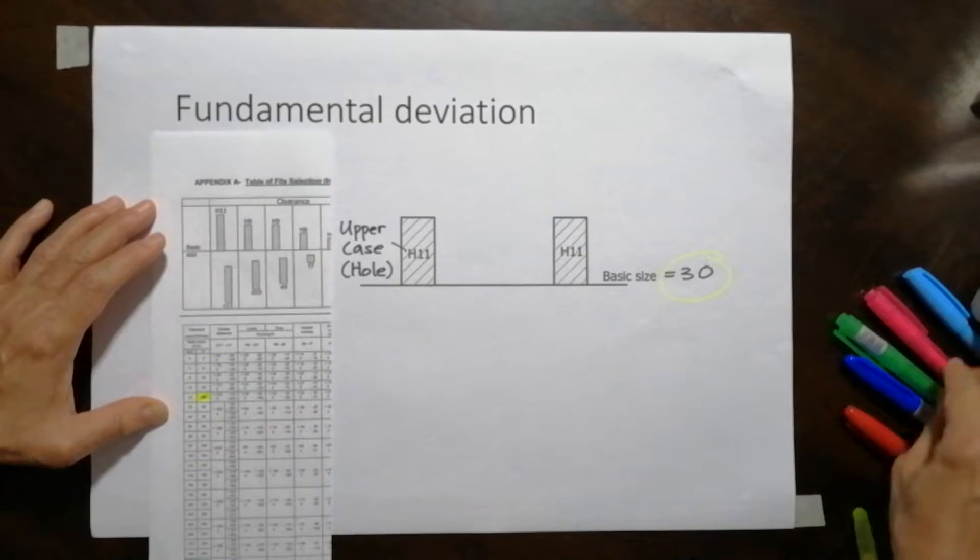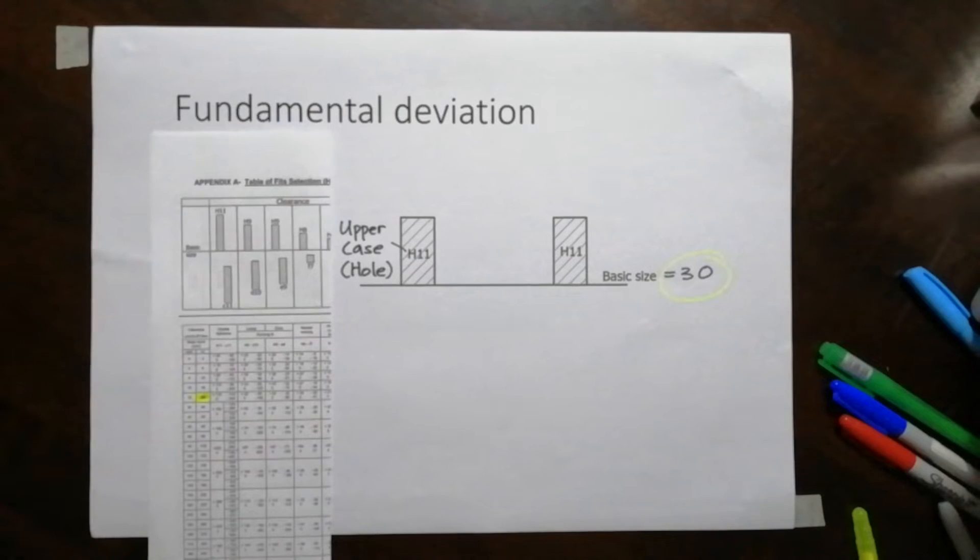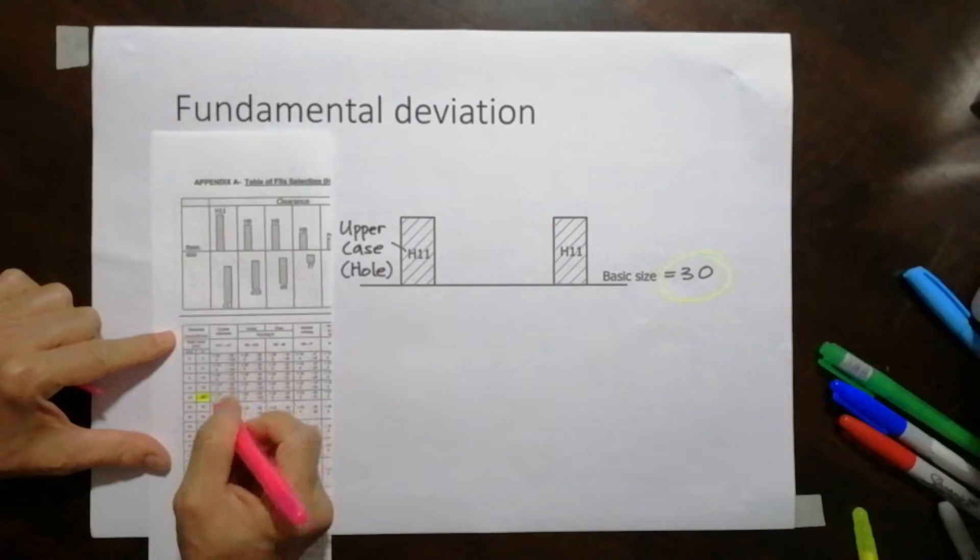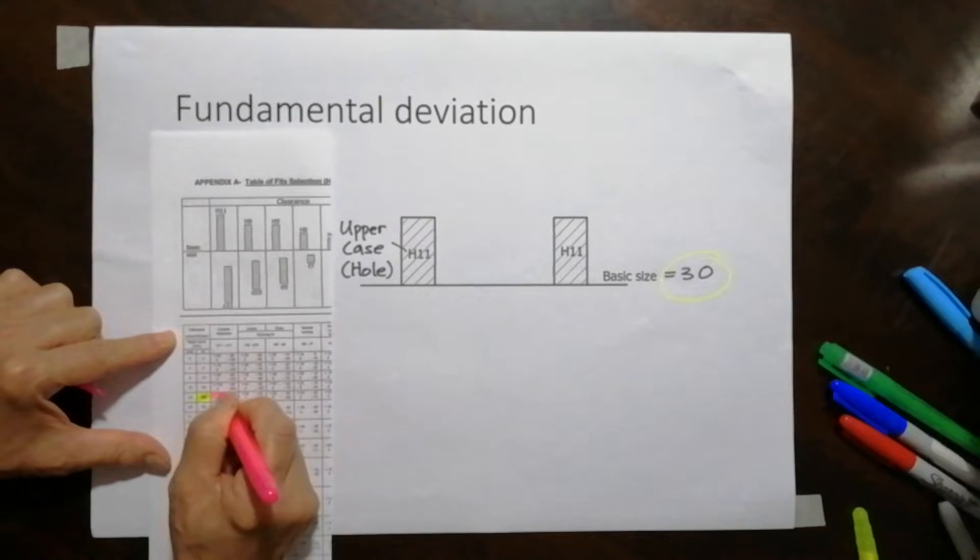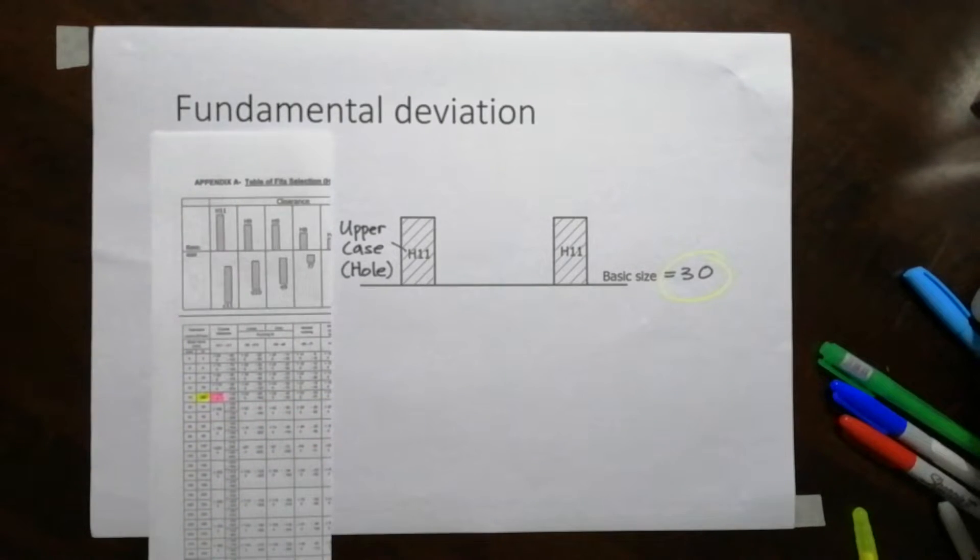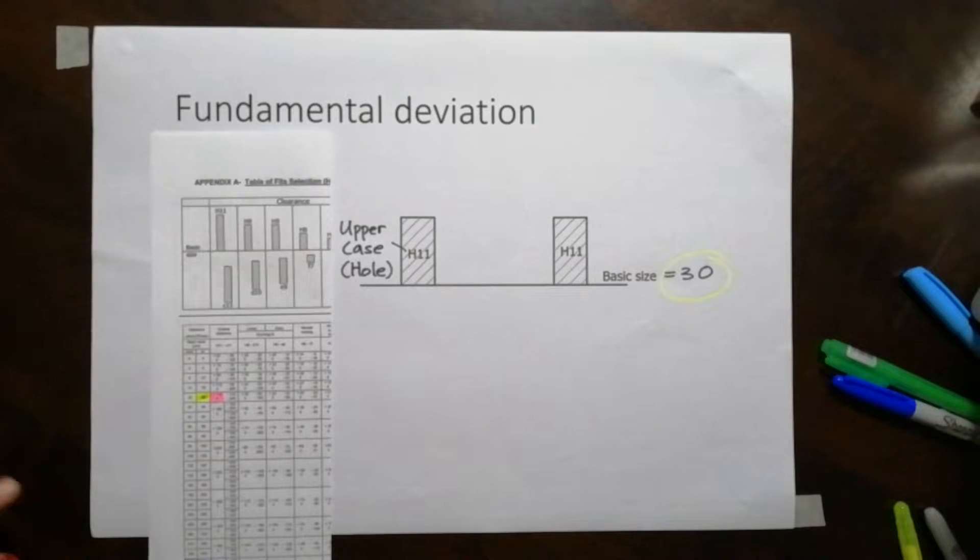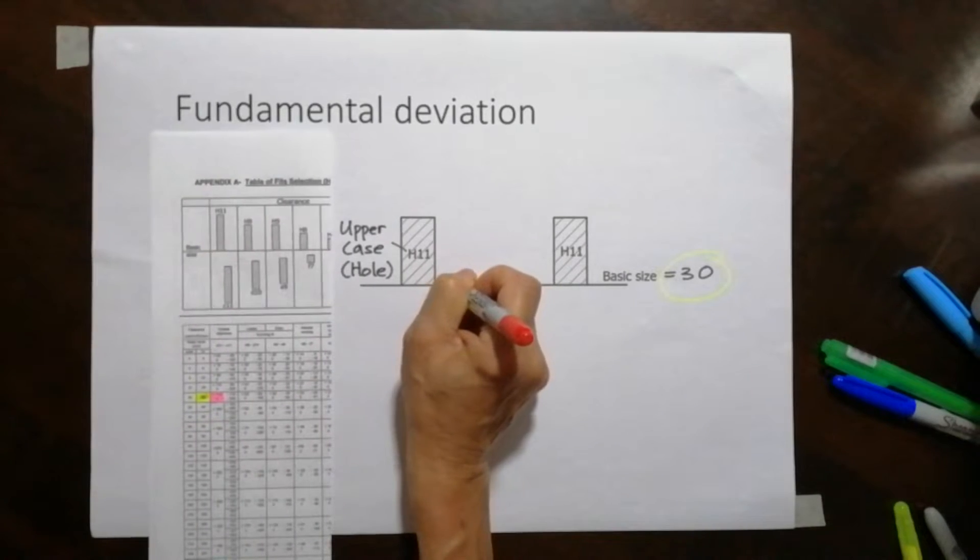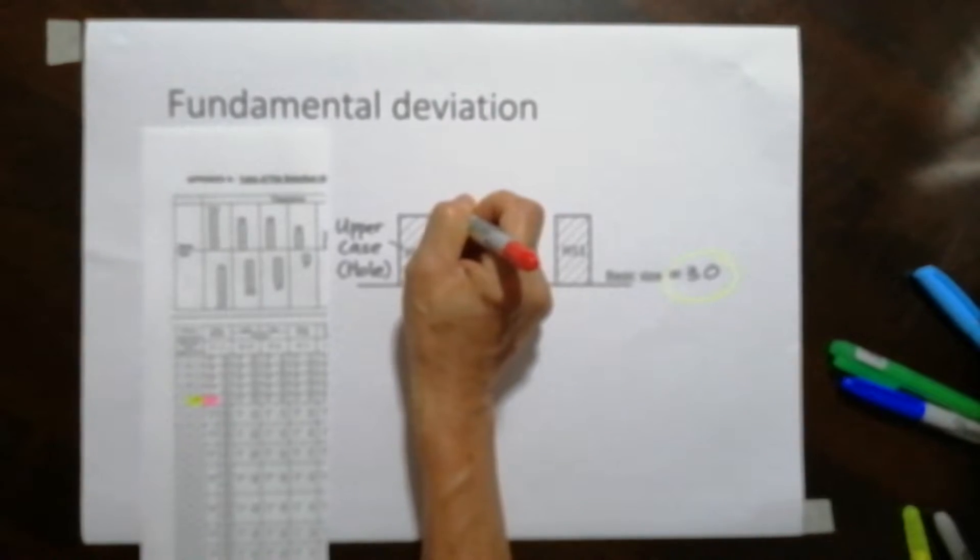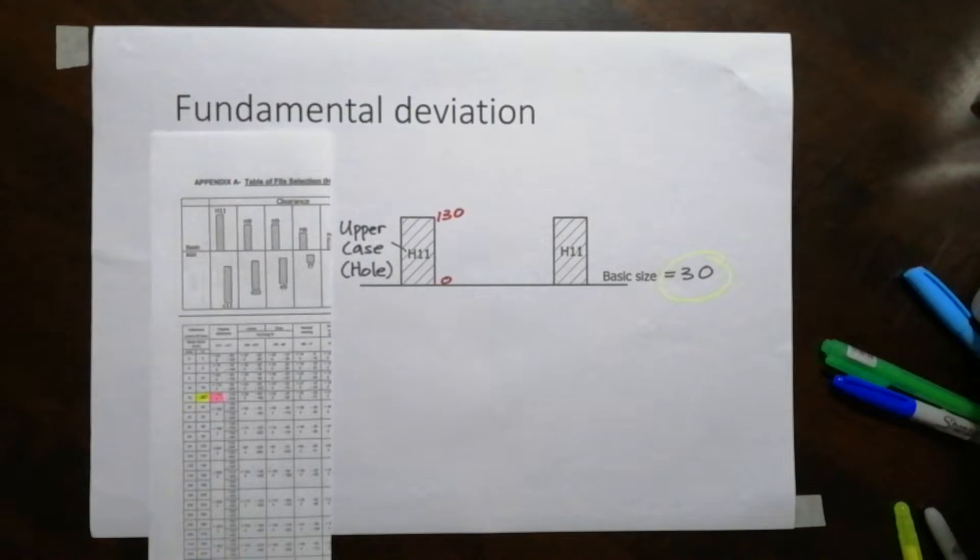Under H11, I see two numbers. The number is 0 and 130. In other words, over to this box, it will be 0 over this side and 130 over this side. That's what we gather from the table. So that hole has a tolerance between 0 to 130.